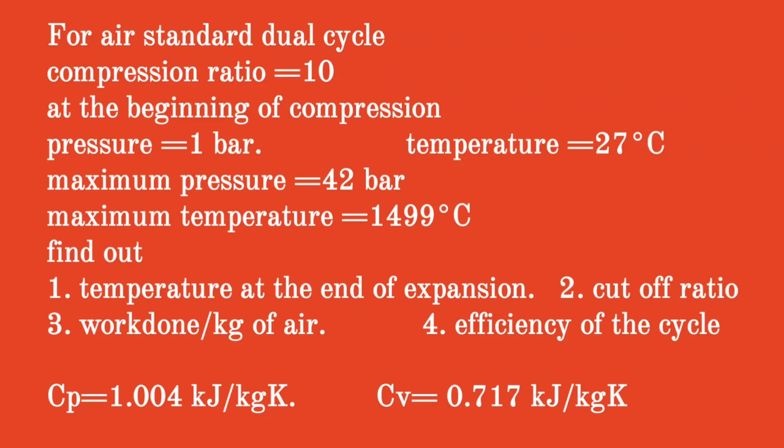Given question: for air standard dual cycle, compression ratio is equal to 10. At the beginning of compression, pressure is equal to 1 bar. Temperature is equal to 27 degree Celsius. Maximum pressure is equal to 42 bar. Maximum temperature is equal to 1499 degree Celsius. Find the temperature at the end of expansion, cutoff ratio, work done per kilogram of air, and cycle efficiency. Cp is equal to 1.004 kJ/kg·K. Cv is equal to 0.717 kJ/kg·K for air.